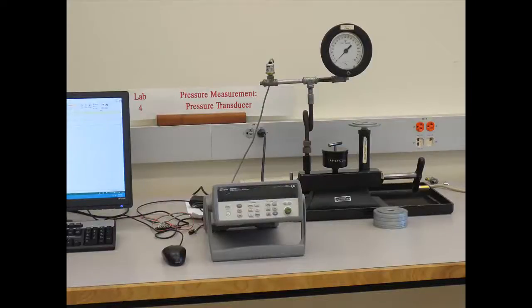This is Experiment 4, Pressure Measurement. The goal here is to learn how pressure transducers and Bordon tube gauges can be used to measure pressure and also to learn how to calibrate a pressure transducer with a dead weight tester.